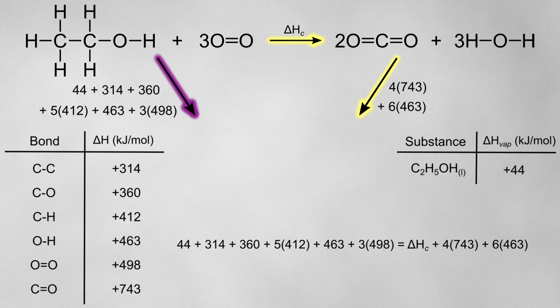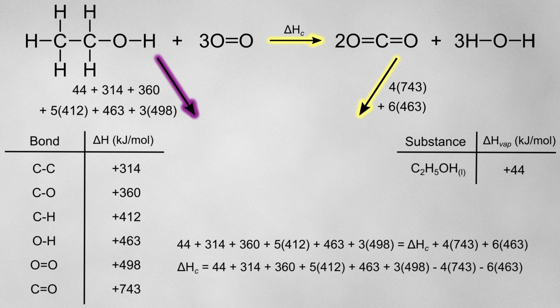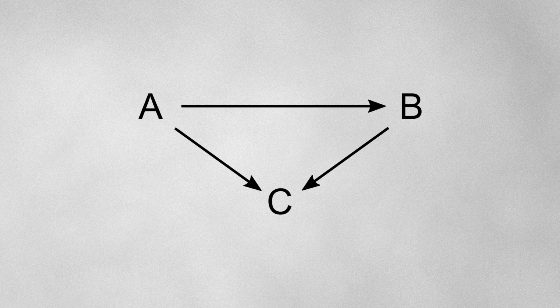With a bit of rearranging, we can calculate the enthalpy of combustion for ethanol, which comes out to minus 1015 kJ per mole. In summary, when setting up your Hess cycles, always try to find two routes which follow the direction of your arrows — that way, you won't have to worry about changing any of the signs of the enthalpy changes, making everything a lot simpler. I hope you enjoyed this video; please subscribe for more and let me know in the comments if you have any questions.